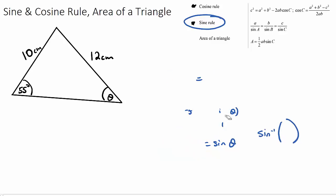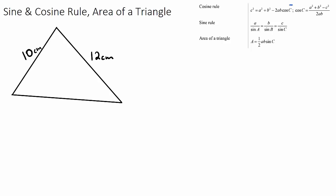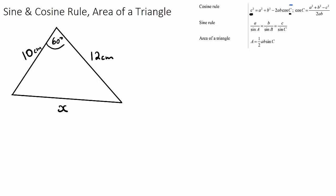The cosine rule is useful if we have three side lengths involved. The first cosine rule equation is: c squared equals a squared plus b squared minus 2ab cos C. The variable you want to find — the side length c — needs its opposite angle C to be given. So if we have two side lengths and an angle and want to find a third side length, that's when we use the cosine rule. The sine rule wouldn't help us here.